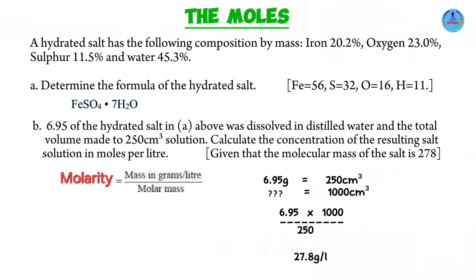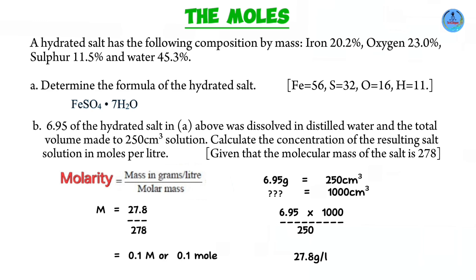We are now ready. Molarity equals the mass in grams per liter, which is 27.8, over the molar mass 278. This gives us a molarity of 0.1 M. And that is our final answer for part B.